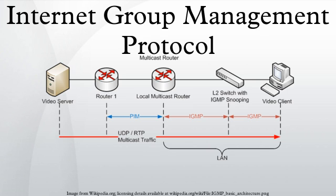Membership queries are sent by multicast routers to determine which multicast addresses are of interest to systems attached to its network. Routers periodically send general queries to refresh the group membership state for all systems on its network. Group-specific queries are used for determining the reception state for a particular multicast address. Group- and source-specific queries allow the router to determine if any systems desire reception of messages sent to a multicast group from a source address specified in a list of unicast addresses.